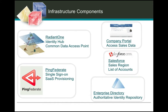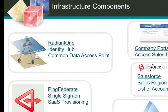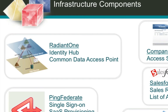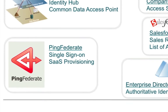The components I'm going to show as part of the demo are Radiant One, which is Radiant Logic's virtual directory server. I'm going to use that as the identity hub — a common access point to information both from within your firewall and also coming from Salesforce directly. I'm also going to use Ping Federate, which is Ping Identity's product that will allow us to do single sign-on from the portal into Salesforce and also handle the provisioning of users in and out of Salesforce.